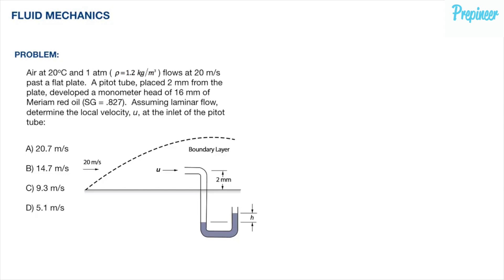The problem states: air at 20 degrees Celsius and one atmosphere has a density of 1.2 kilograms per meter cubed, flows at 20 meters per second past a flat plate. A pitot tube placed 2 millimeters from the plate developed a manometer head of 16 millimeters of Merriam red oil.